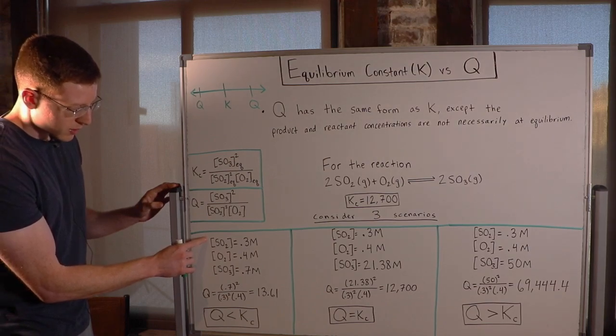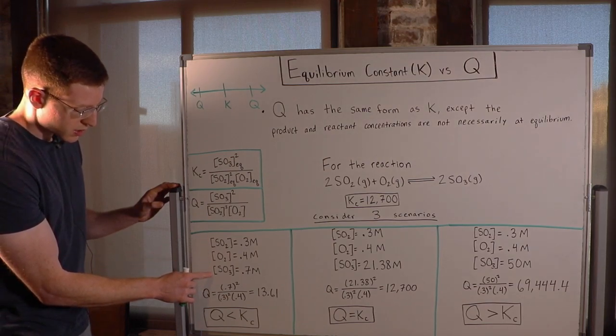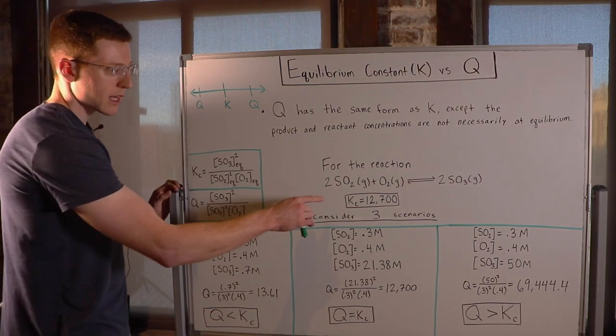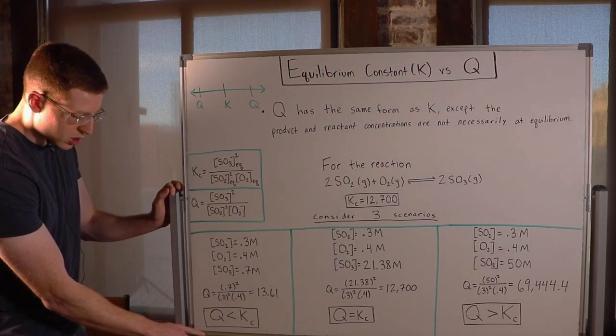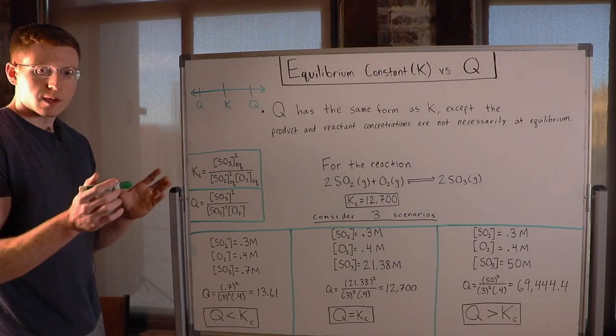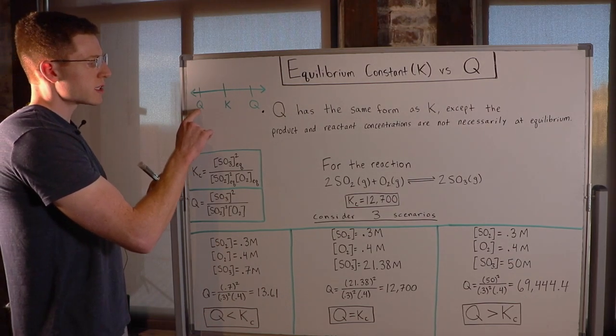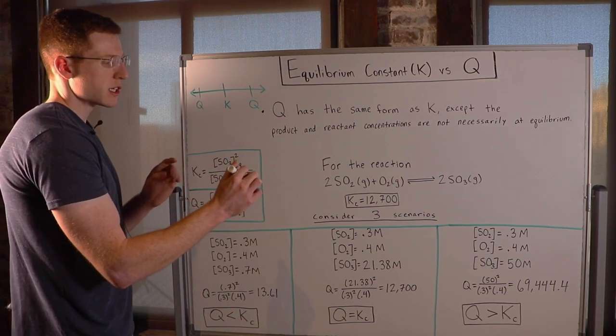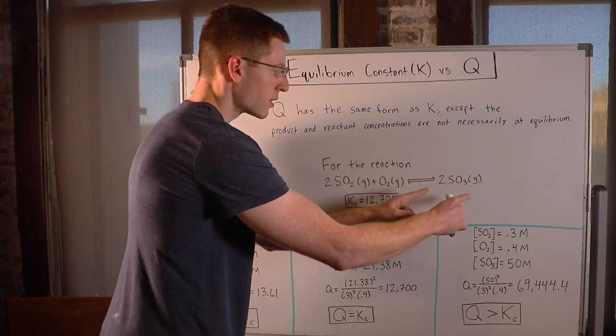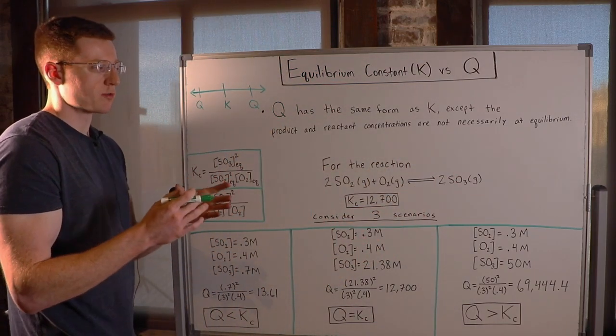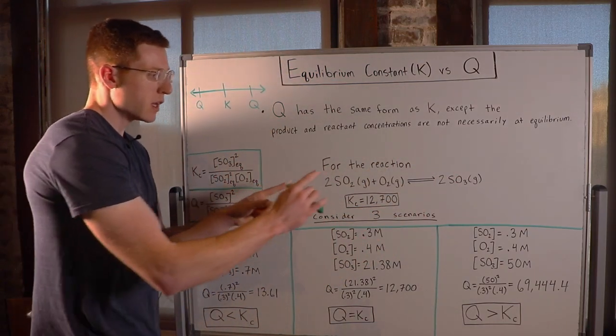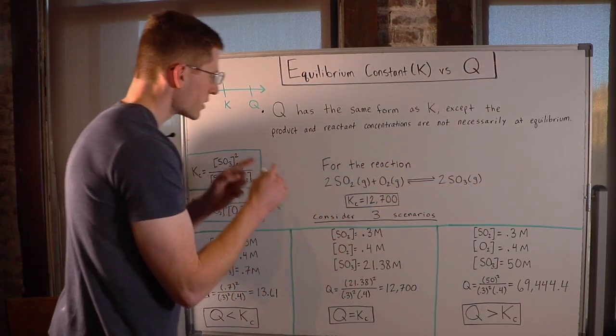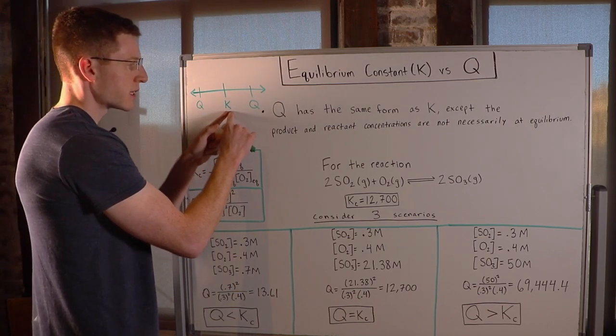So in this first example, with these initial reaction concentrations, the Q was 13.61. That's a lot less than our K. So in this case, Q is less than Kc. If you think about this on a number line, Q is going to be over here, less than Kc. What that means is that the reaction is going to shift forward to reach K. A reaction always wants to reach its equilibrium. So in this case, more reactants are going to turn into products so that Q can reach up to K.